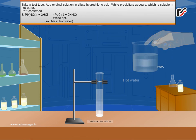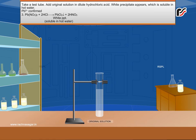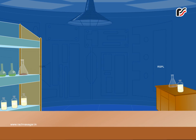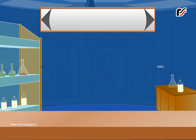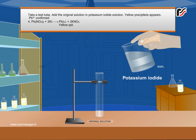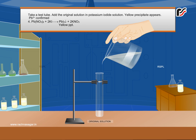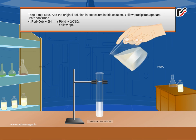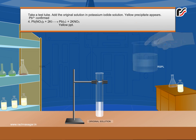Take a test tube and add the original solution in potassium iodide solution. A yellow precipitate appears, confirming the presence of the Lead Ion (Pb²⁺).